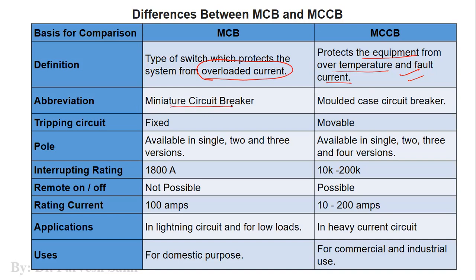MCB stands for miniature circuit breaker, and MCCB stands for molded case circuit breaker. MCB is available in single pole, two pole, and three pole versions, while MCCB is available in single, two, three, and four pole versions. MCB cannot be operated from a remote location — it either operates automatically or manually — but an MCCB can be operated through remote location in addition to automatic and manual operation.